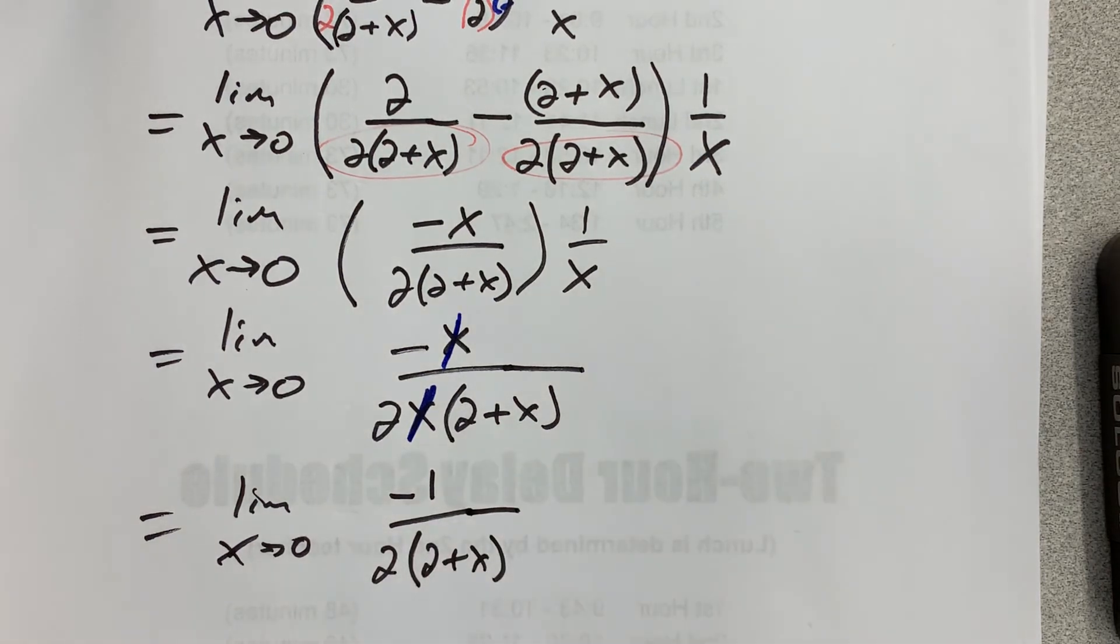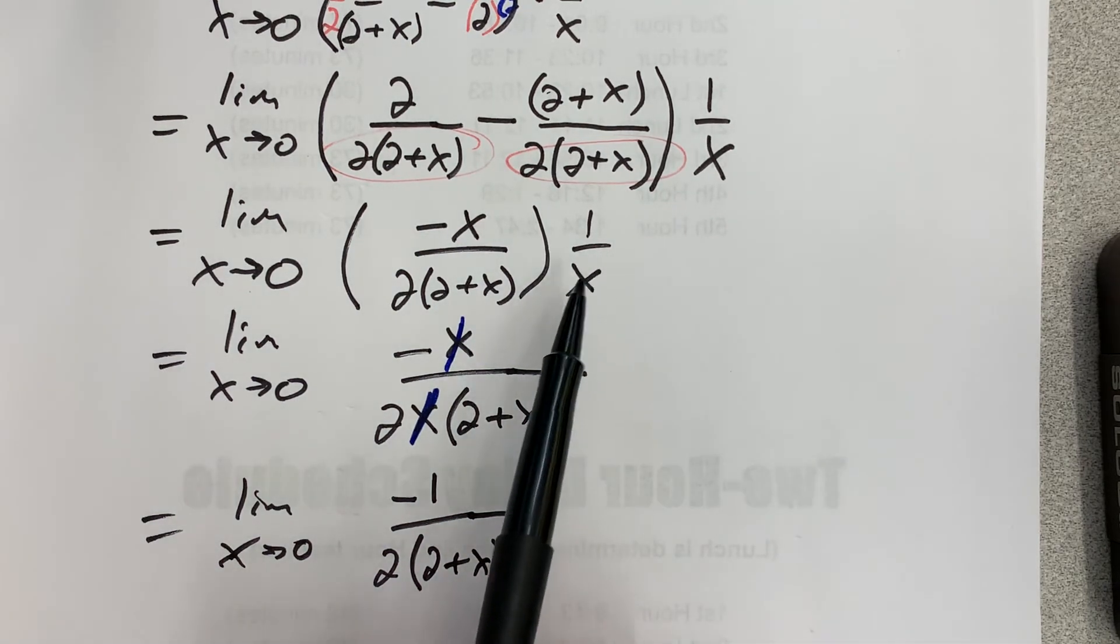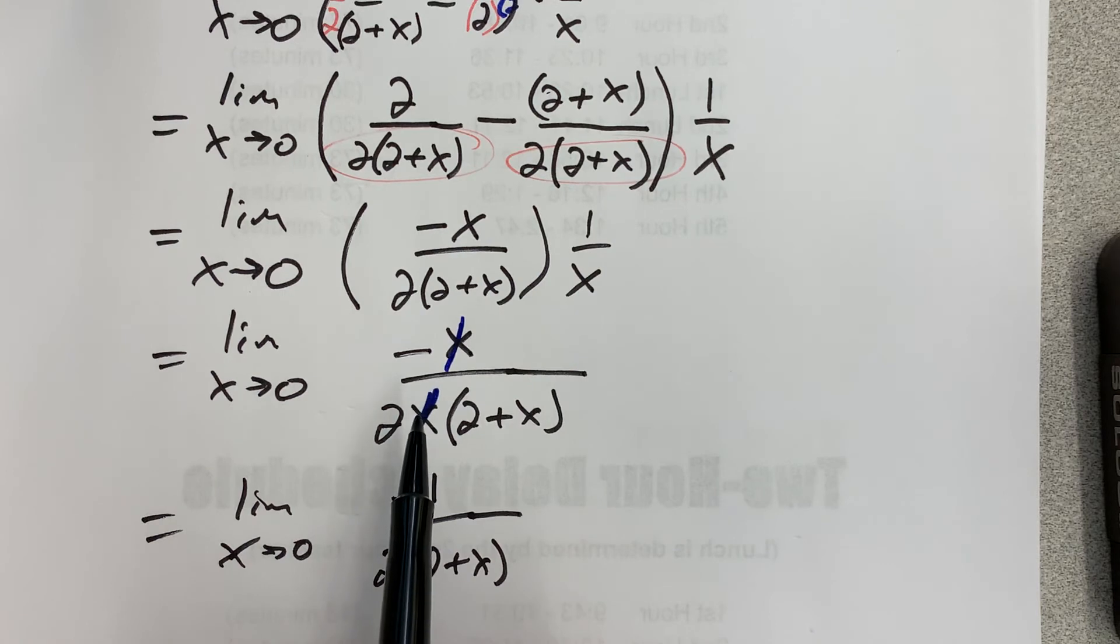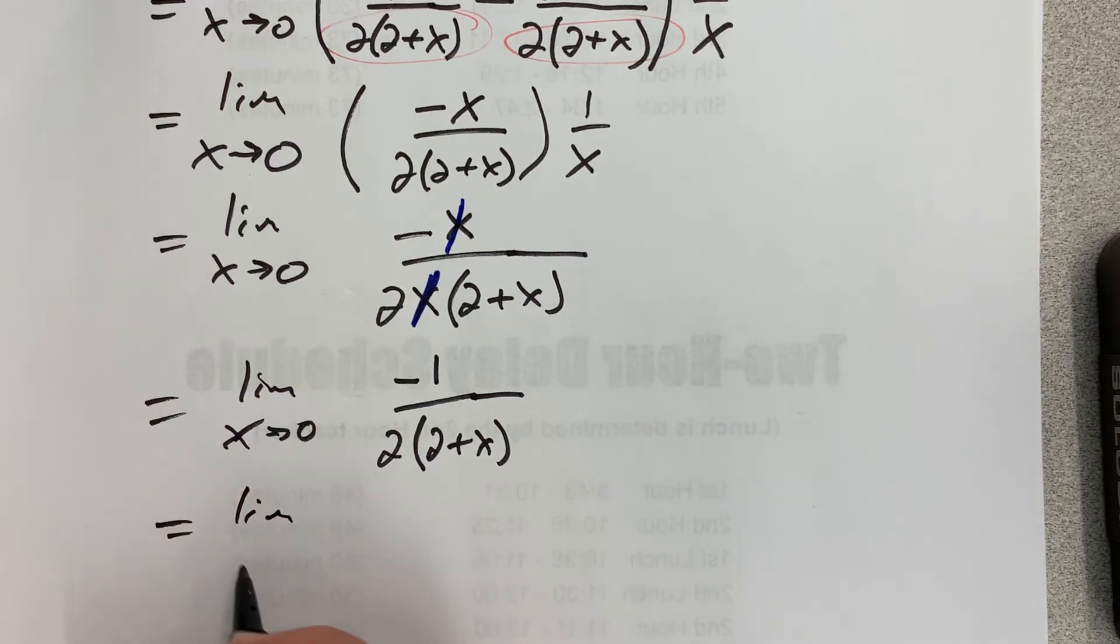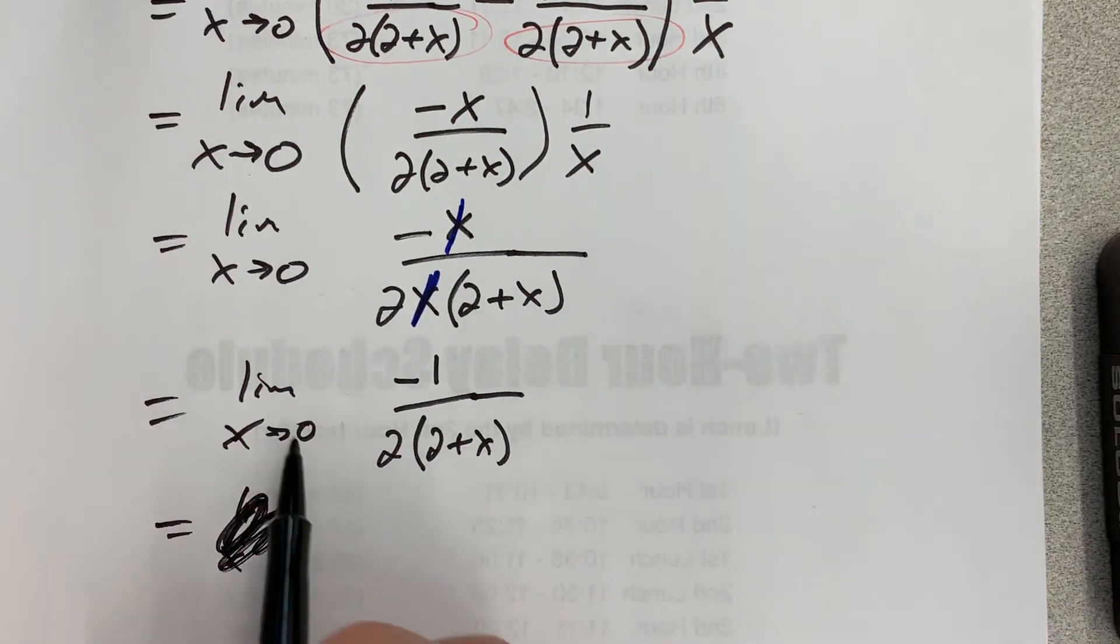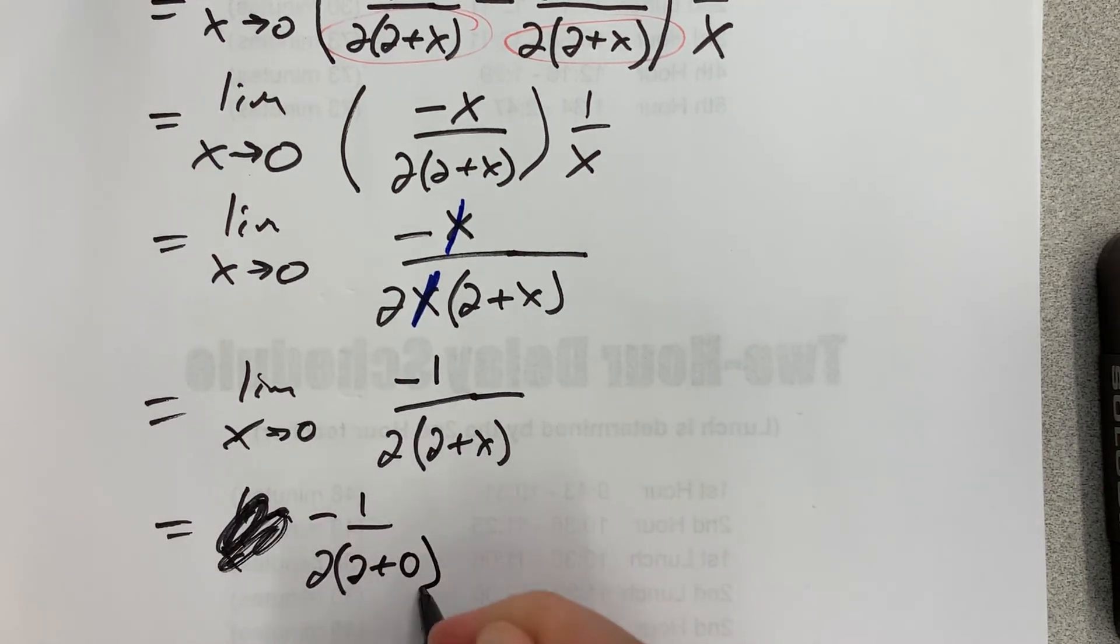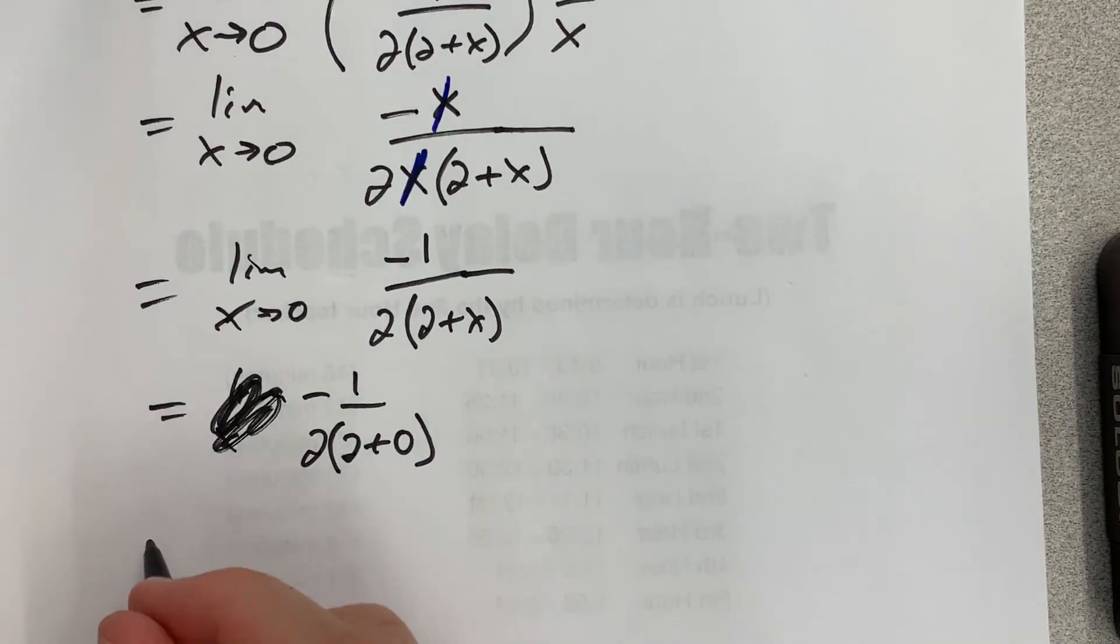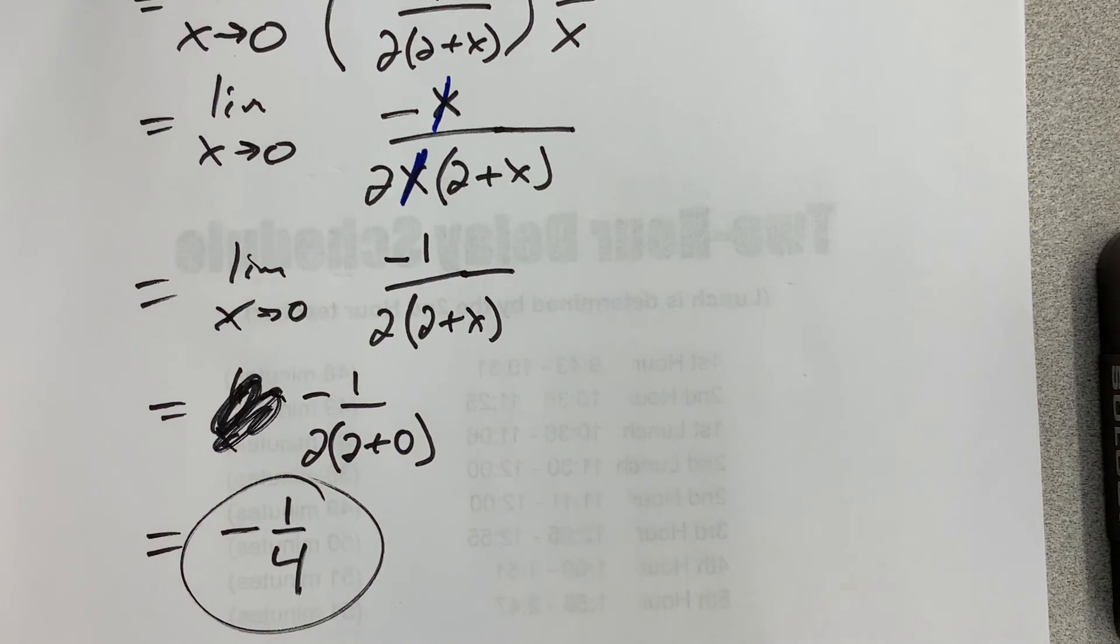Now I can try direct substitution. Honestly, I should have been trying the direct substitution after every line of algebra, but you can see that we're going to have a divide by 0 every time up until this moment right here. Now if I try direct substitution to evaluate the limit, I think I'm going to win because I'm not going to get a divide by 0 error. So plug in 0. I'm going to get negative 1 over 2 times 2 plus 0, and that is negative 1 fourth. Cool.